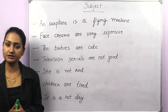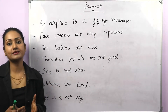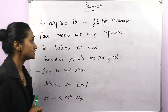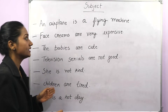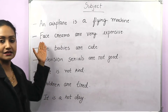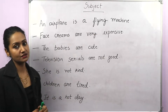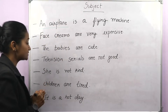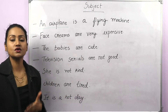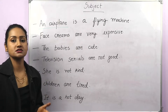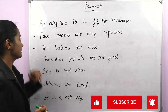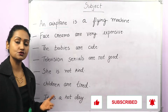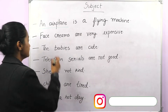Here we have some more examples of sentences where we do not have a main verb. First one: 'An airplane is a flying machine.' In this sentence there is no action happening. But what are we talking about? An airplane. So an airplane is the subject. When there is no main verb in a sentence, anything we are talking about is the subject. 'Face creams are very expensive.' What is expensive? Face creams. So we are talking about face creams, so face creams is the subject.